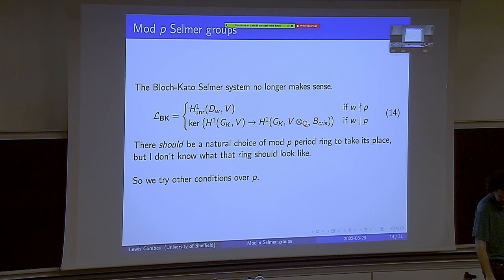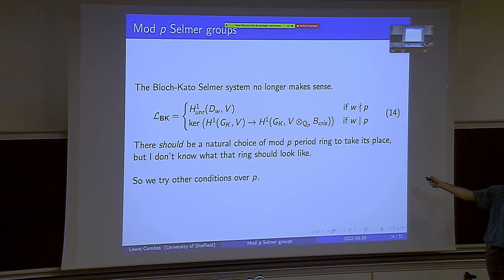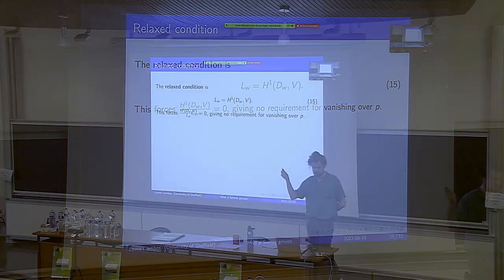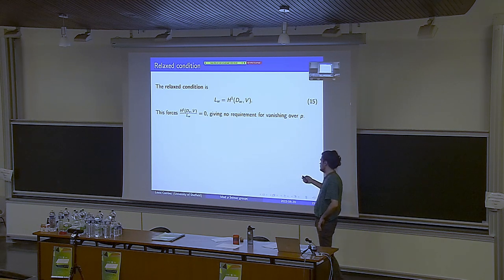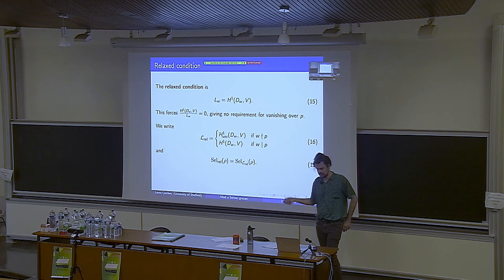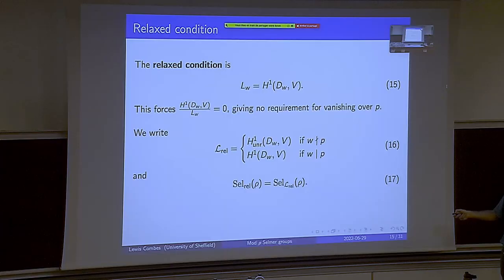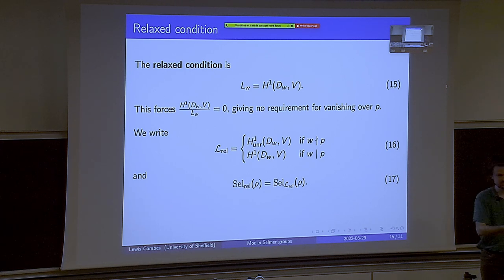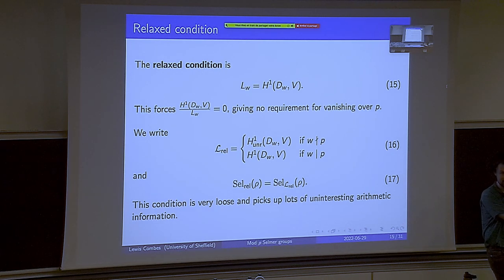We're going to try other conditions over P and keep unramified everywhere else, so all we're really tinkering with is primes over our characteristic. The relaxed condition takes the whole H^1(D_W, V) space, giving no requirement at P — very permissible. We write this as Sel_rel. This Selmer group is sort of larger because we're not cutting away much — it picks up lots of stuff we don't really care about, but it's a good place to start.